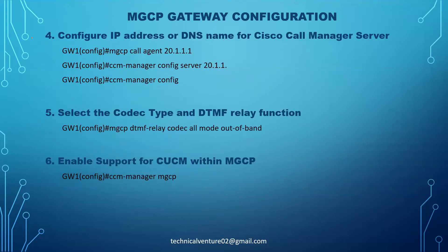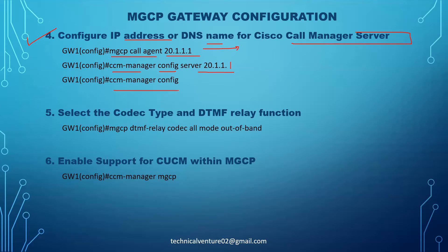Step four: configure the IP address or DNS name for the CUCM server. The first command you need is 'mgcp call-agent 20.1.1.1' — this is your CUCM server IP. Then use the command 'ccm-manager config server 20.1.1.1' — this is used to download the configuration from the TFTP server. Then the command 'ccm-manager config' enables that download — it enables downloading configuration files from the TFTP server.